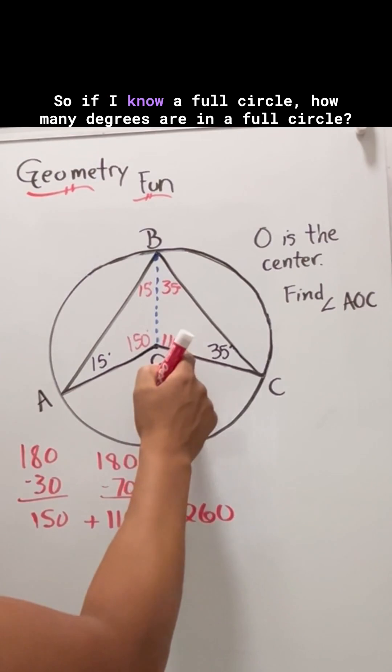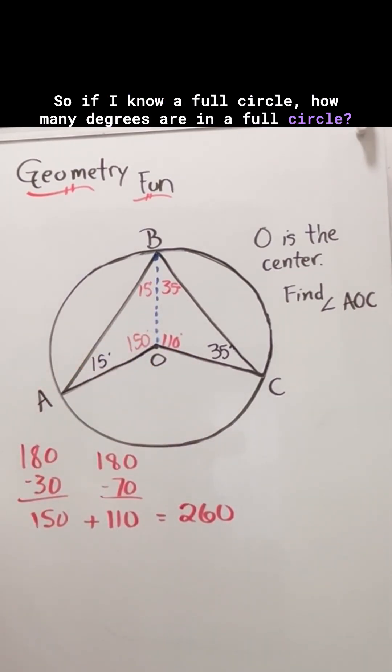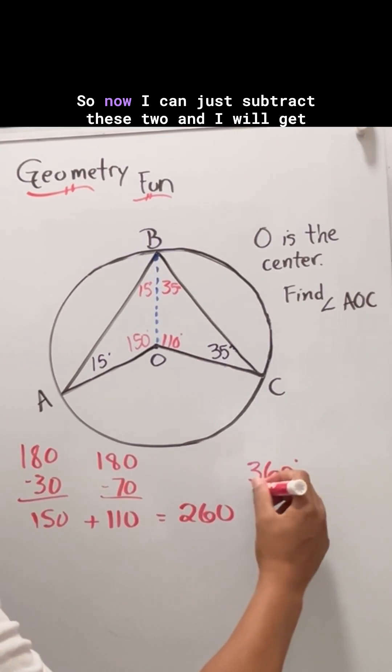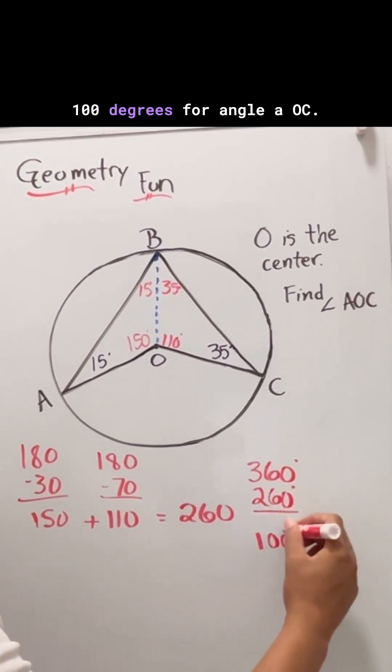A full circle has 360 degrees. Now I can just subtract these two and I get 100 degrees for angle AOC.